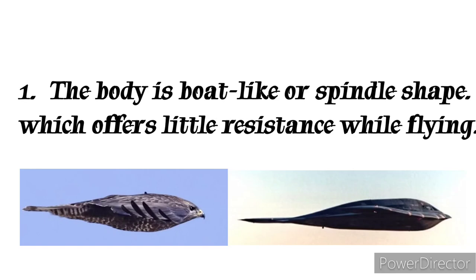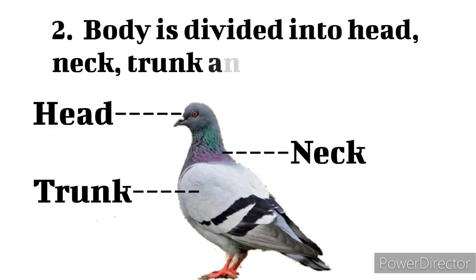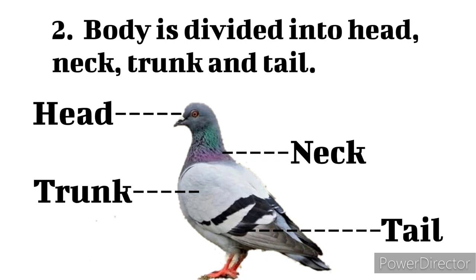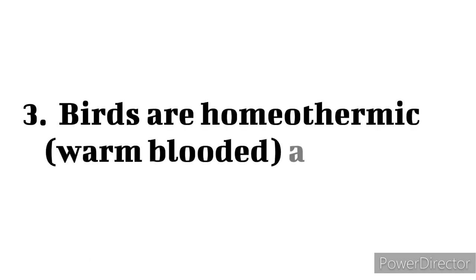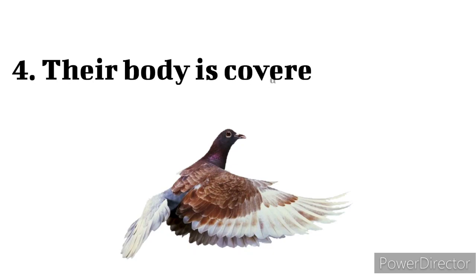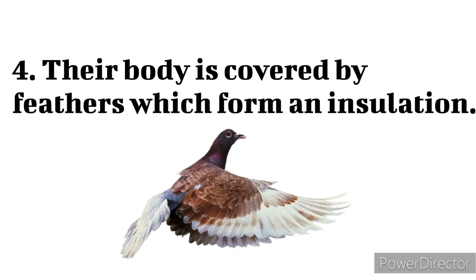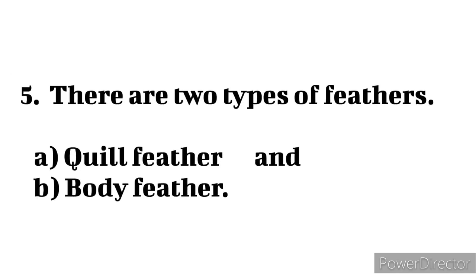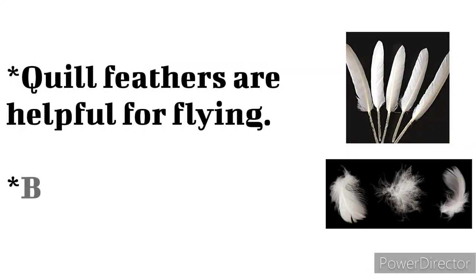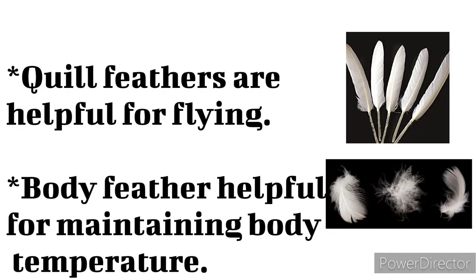General characters. 1. The body is boat-like or spindle shaped, which offers little resistance while flying. 2. Body is divided into head, neck, trunk and tail. 3. Birds are homeothermic, warm-blooded animals. 4. Their body is covered by feathers which form an insulation. 5. There are two types of feathers: quill feather and body feather. Quill feathers are helpful for flying and body feathers are helpful for maintaining body temperature.